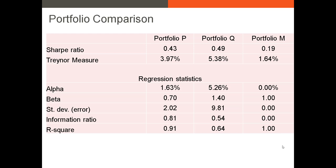Now let's examine the actively managed portfolios P and Q, starting with their Sharpe ratios. Portfolio Q has the higher Sharpe ratio, indicating it offered a higher risk-adjusted return over the period. Portfolio Q also has the higher Treynor measure, again indicating a higher risk-adjusted return. As we move to the regression statistics, keep in mind that we're regressing the returns of portfolios P and Q on the return of the market portfolio M. Portfolio Q has a positive alpha, indicating it outperformed its CAPM-expected return. Portfolio P also has a positive alpha. Notice that the beta of Q is double that of portfolio P, indicating that portfolio Q is exposed to far more market risk.